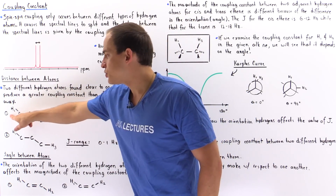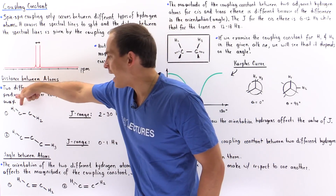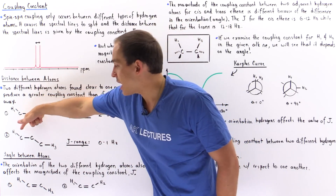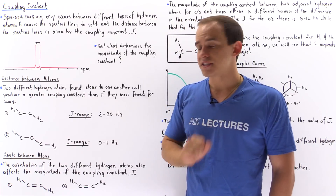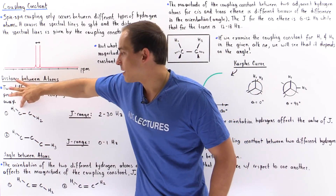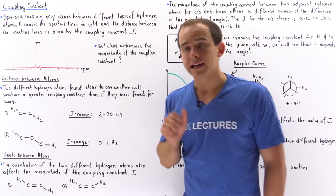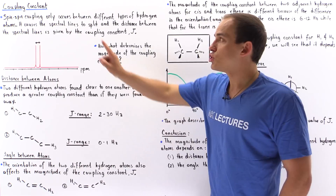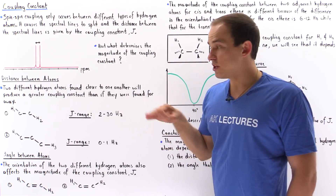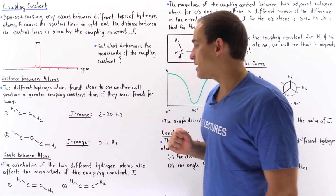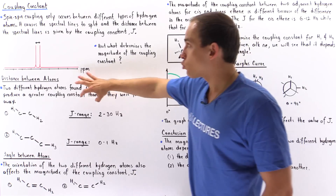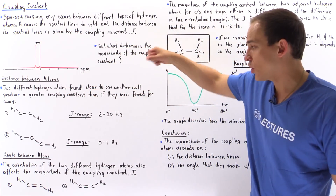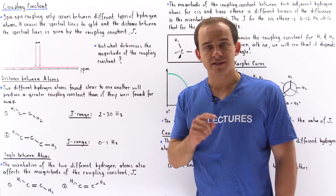In molecule 1 the two different H atoms are found three sigma bonds apart, but in molecule 2 the H atoms are found four sigma bonds apart. Because the separation distance in molecule 1 is less than the separation distance in molecule 2, the magnitude of the coupling constant will be greater for molecule 1 than for molecule 2.